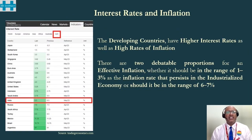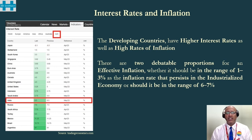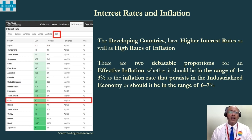On interest rates and inflation: developing countries experience higher interest rates and higher rates of inflation, which is beneficial compared to earning low or negative interest rates. The debate surrounds the optimal inflation rate — whether it should be in the range of 1 to 3 percent, as in industrialized economies, or in the range of 6 to 7 percent.